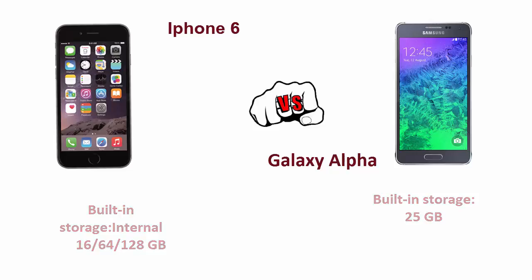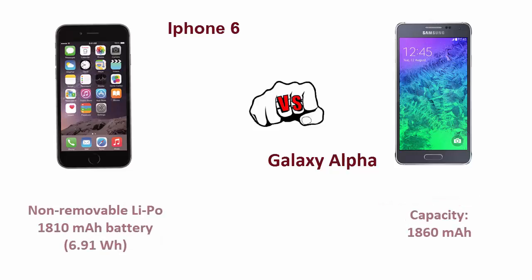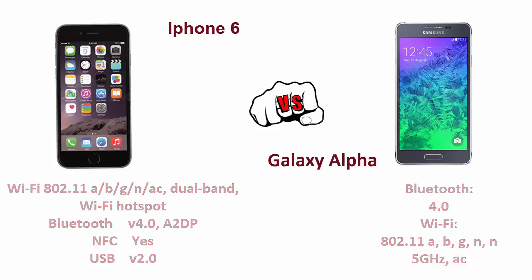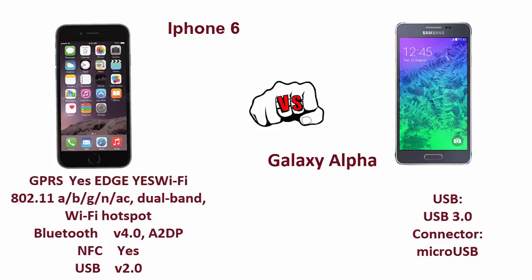The battery capacity of the iPhone 6 is 1810 mAh and the Galaxy Alpha is 1860 mAh. When it comes to connectivity, both smartphones have Bluetooth 4.0 and NFC. The iPhone 6 has USB 2.0 whereas the Galaxy Alpha has USB 3.0 with micro USB connectivity.